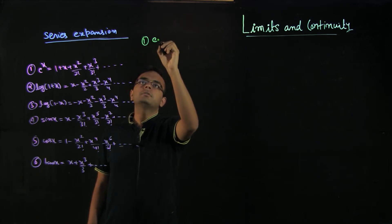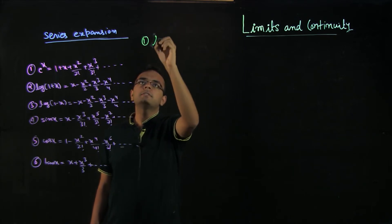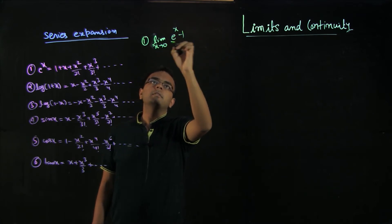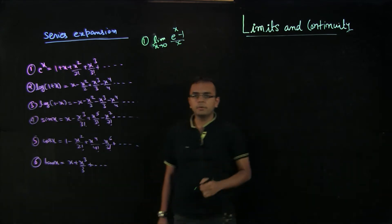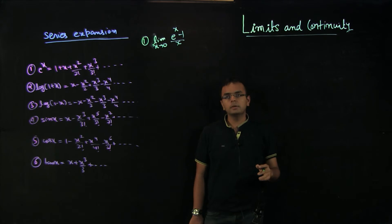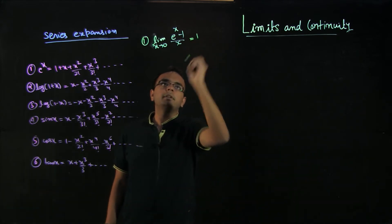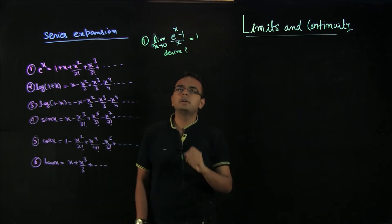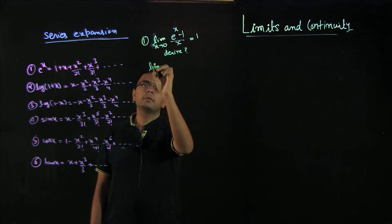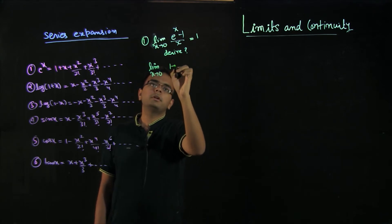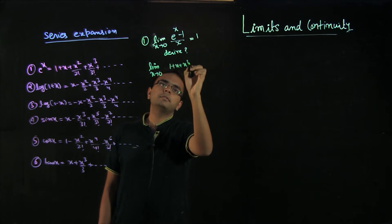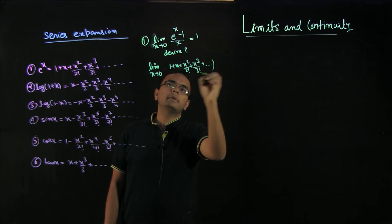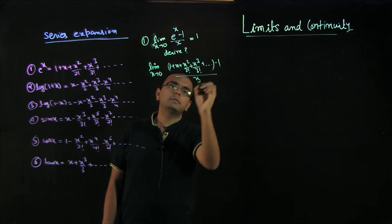For example, the problem is: limit x tends to 0 of (e raised to the power of x minus 1) by x. We already know the answer to this problem is 1, but can we derive it using series expansion? So let us substitute the series expansion of e^x, which is 1 plus x plus x² by 2 factorial plus x³ by 3 factorial and so on, minus 1, all divided by x.